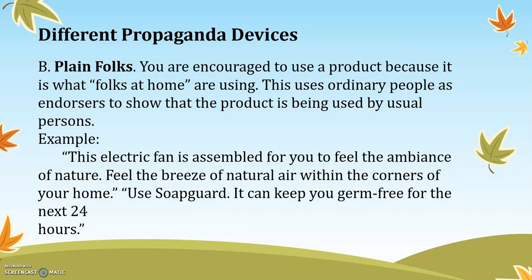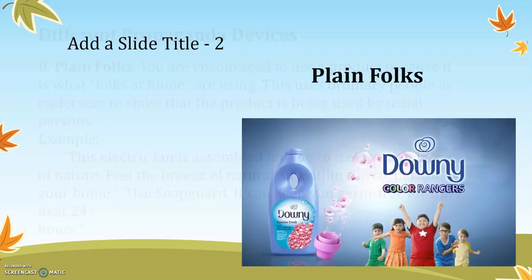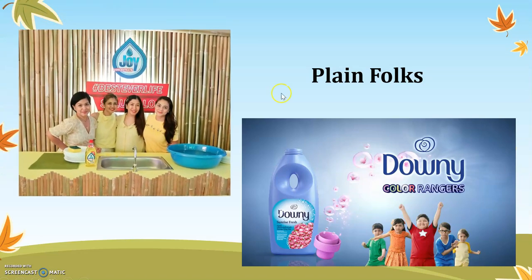Plain folks: you are encouraged to use a product because it is what ordinary people at home are using. This uses ordinary people as endorsers to show the product is used by the average person. Example: 'This electric fan is assembled for you to feel the ambience of nature.' Here we see ordinary children and housewives endorsing products like Joy dishwashing liquid and Downy fabric conditioner.